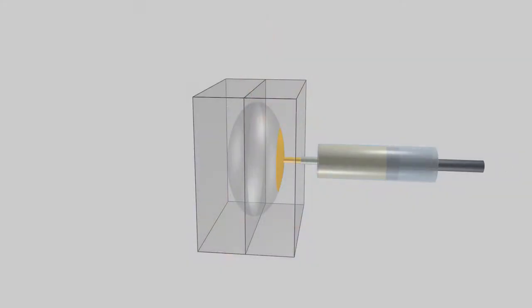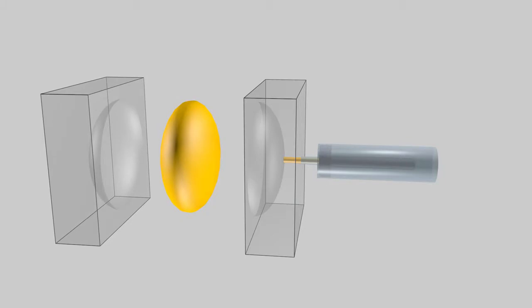In principle, injection molding is simple. Melt plastic, inject it into a mold, let it cool, and then out pops a plastic product. In reality, injection molding is an intricate and complex process.